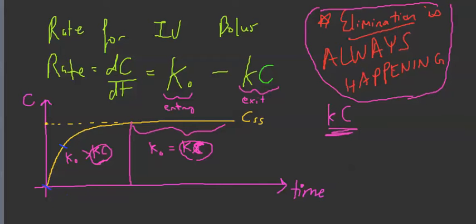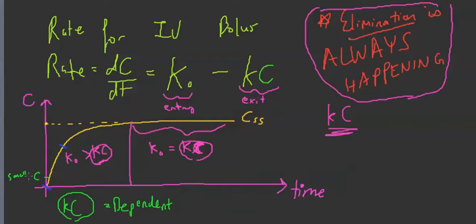Another thing to notice is that the concentration rises steeply at first and then flattens. This is because first-order elimination is dependent on concentration — rate is Kc. When C is small, elimination is small, so the curve is steep. But as C gets bigger, elimination kicks in more and more, which is why the curve starts steep and then levels out until you reach the max CSS.